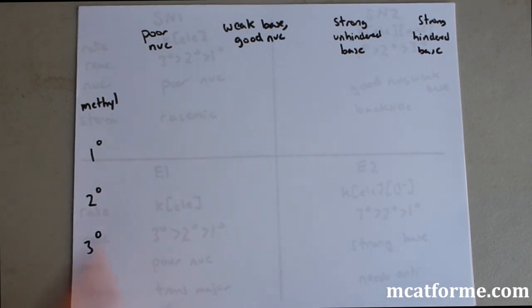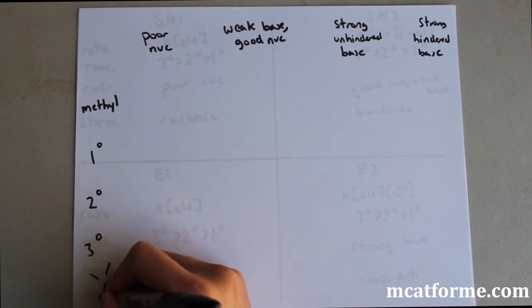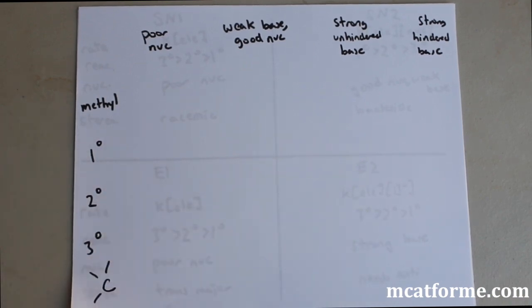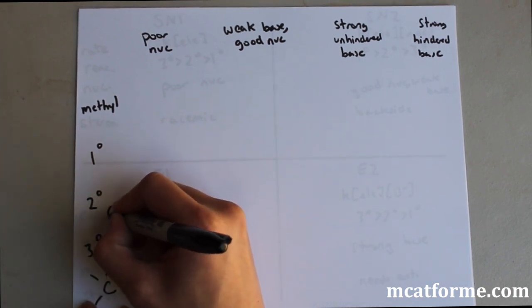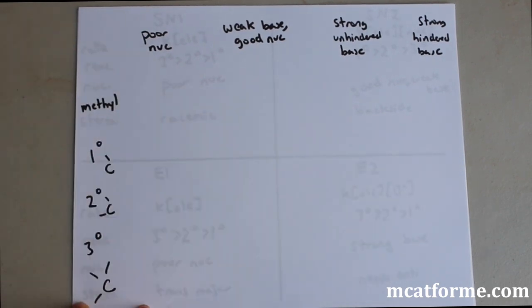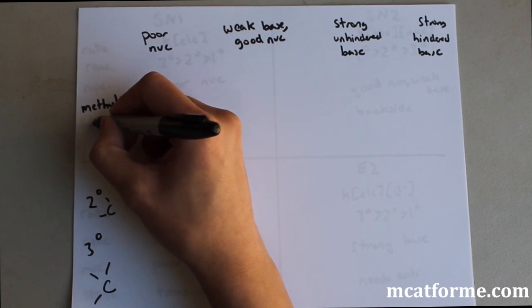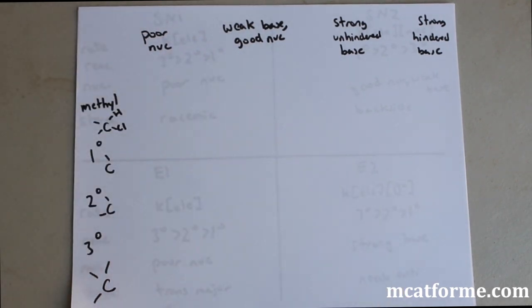The first thing we want to do is understand what all these are. Remember tertiary is, for example, if we're looking at this carbon right here, it's going to have three carbon molecules around it. Secondary is two carbon molecules, one carbon molecule for primary, and methyl means it's not attached directly to any carbon molecules. So it's just C and probably our leaving group, hydrogen, and two molecules that aren't carbons.